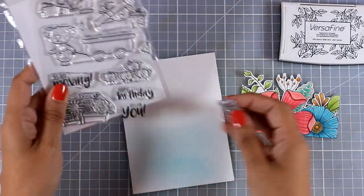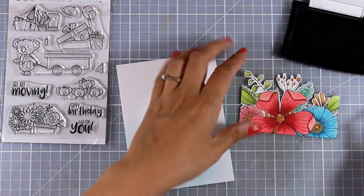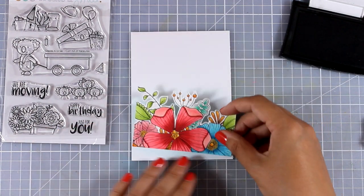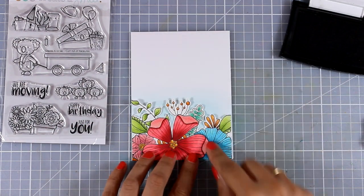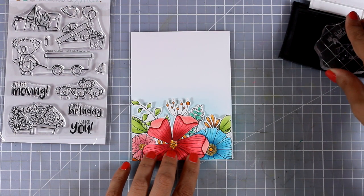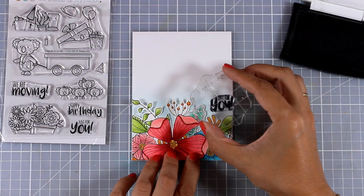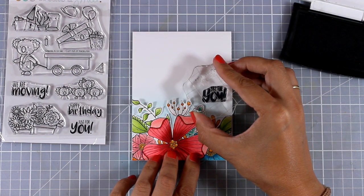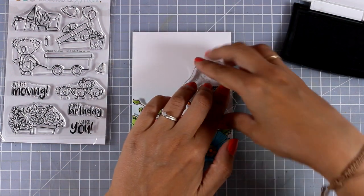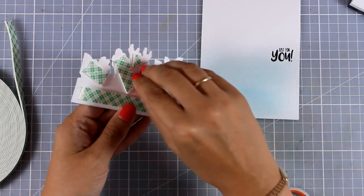Now this is a stamp set again by Create a Smile which is called Card Full of Treasures, and as you can see it's just adorable. I decided to go with a sentiment that says Just For You, but as you can see the stamp set is super cute and it's perfect for birthdays as well as for making cards for moving. Now I'm going to stamp my sentiment there. I used black ink and that's actually VersaFine which leaves a nice and crisp sentiment.